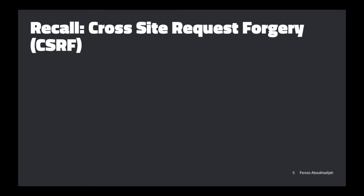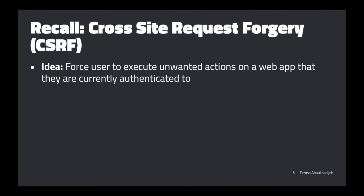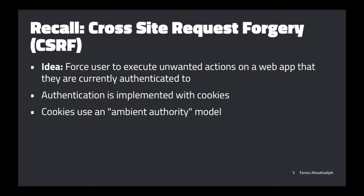Before we go into how it works, let's recall cross-site request forgery. Cross-site request forgery is an attack where an attacker can force a user to execute actions against a web app that they happen to be currently authenticated with or logged into. The way the attacker does this is through cookies, which use what we call the ambient authority model. Cookies are attached automatically by the browser to requests — who remembers ambient authority?